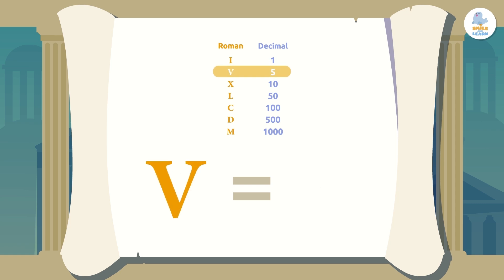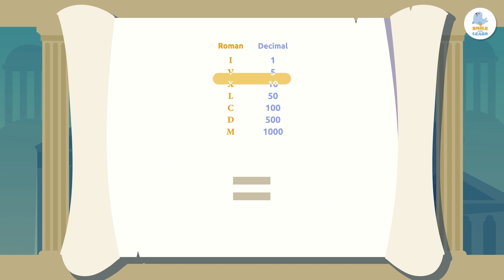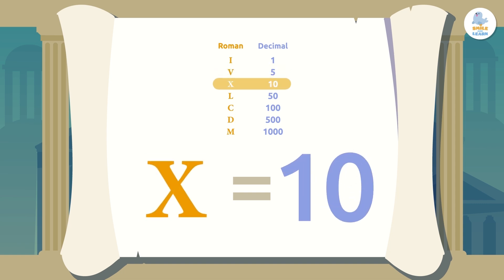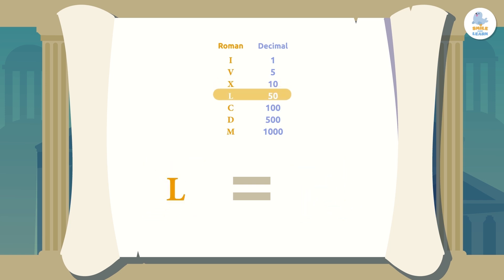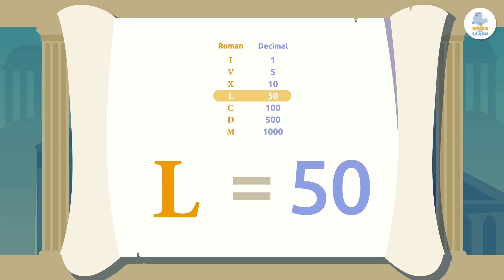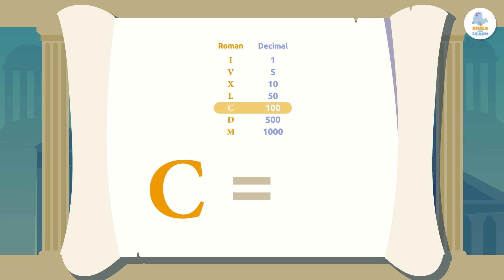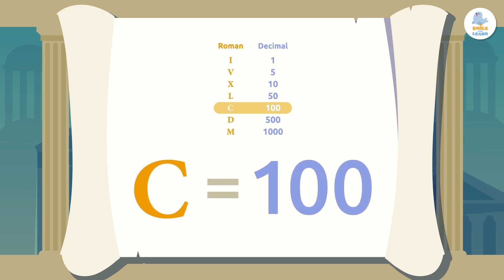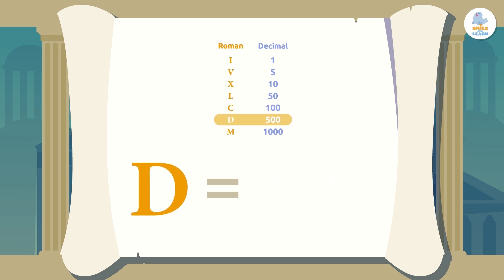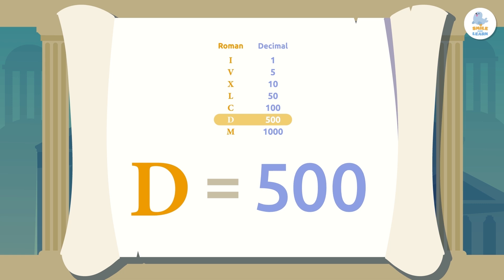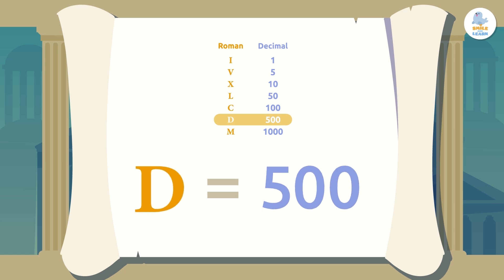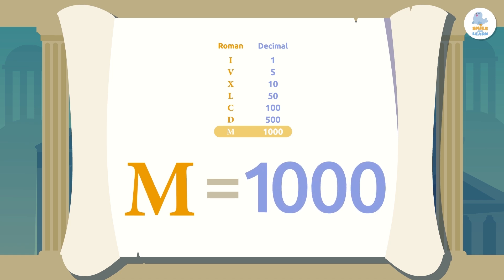The letter V has a value of 5. The letter X has a value of 10. The letter L has a value of 50. The letter C has a value of 100. The letter D has a value of 500. And finally, the letter M has a value of 1,000.